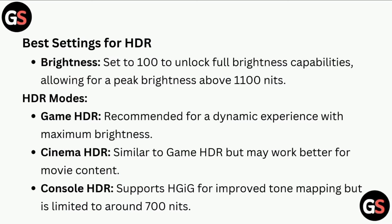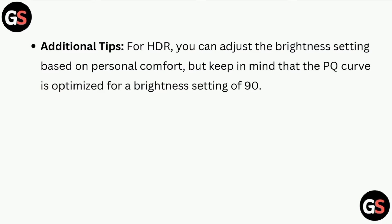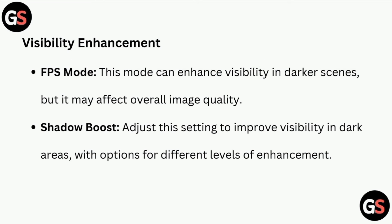Console HDR supports HLG for improved tone mapping but is limited to around 700 nits. As an additional tip for HDR, you can adjust the brightness setting based on personal comfort, but keep in mind that the PQ curve is optimized for a brightness setting of 90.